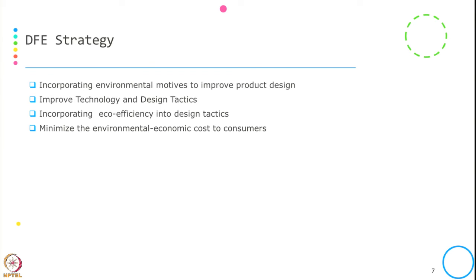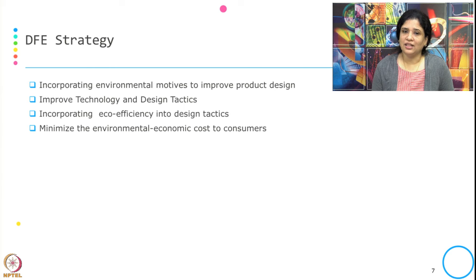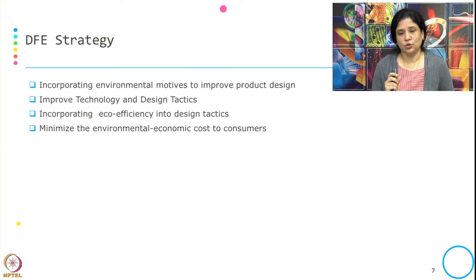What are the DfE strategies? There are four strategies. First, incorporating environmental motives to improve the product design. Second, improve the technology and design tactics. Third, incorporating eco-efficiency into the design tactics. Fourth, minimize the environmental economic cost to the consumer. The first two are mostly about keeping space for recycling — how recycling resources or the recycling product can be part of the product. The second two are mostly about dematerialization — incorporating eco-efficiency so that we produce more with less of resources and minimize the environmental economic cost to the consumer.